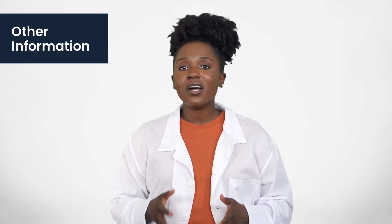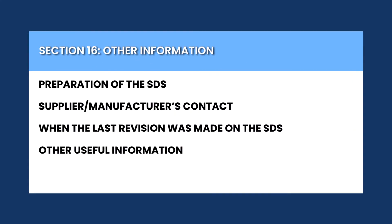Section 16 of the SDS covers other information that may not have been included in the previous sections. This may include information on the preparation of the SDS, such as the contact information for the manufacturer or supplier, the last revision date, and any other relevant information that hasn't been covered.